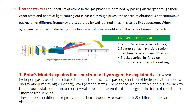Now we have to understand how Bohr's model explains the line spectrum of hydrogen. When electrons in the discharge tube absorb energy, they move up to a higher energy level. This energy state is known as the excited state.